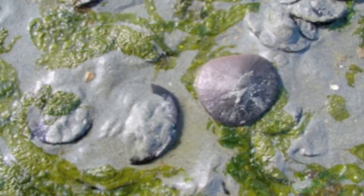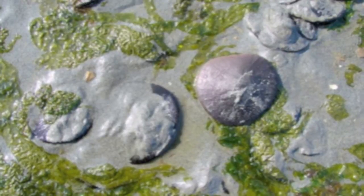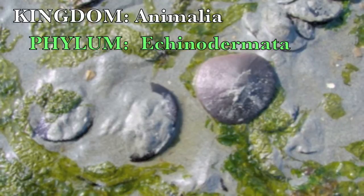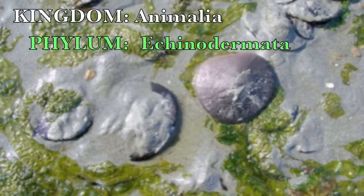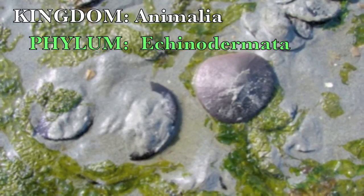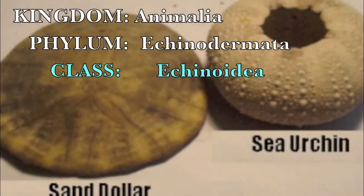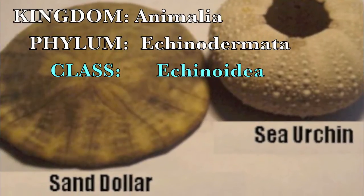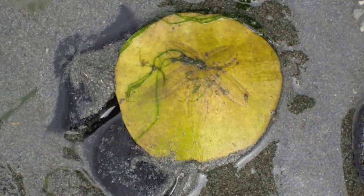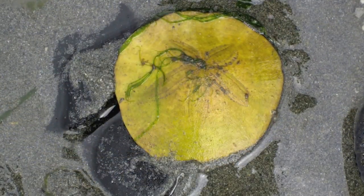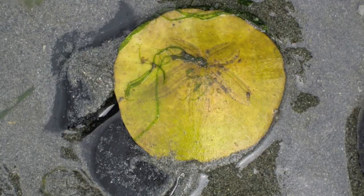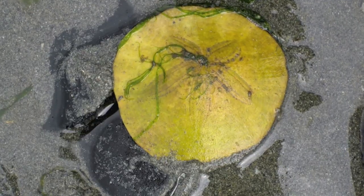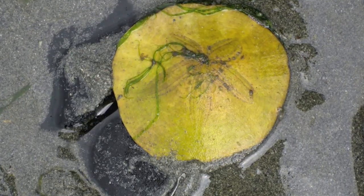Sand dollars are small disc-shaped marine animals in the phylum with sea stars, sea cucumbers, and sea urchins, more closely resembling the urchins as they are in the same class. Though lacking five arms like a starfish, sand dollars do exhibit five-fold radial symmetry characteristic of the phylum.